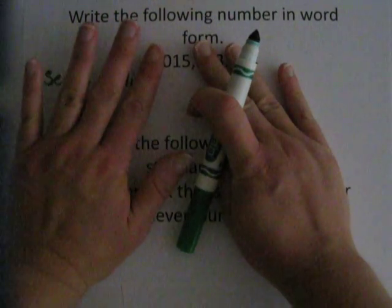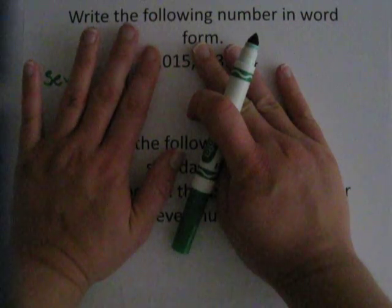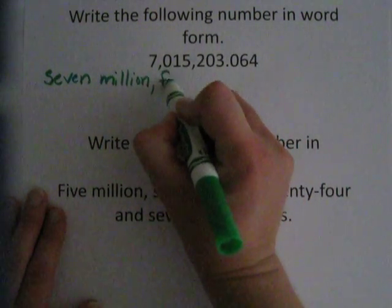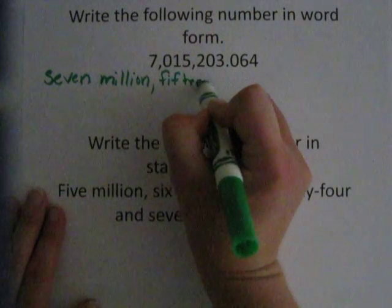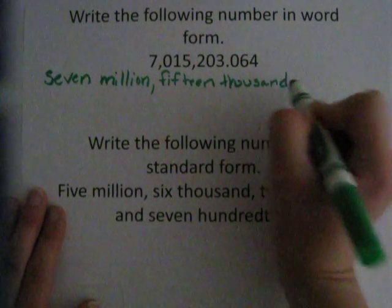Then I look at this next three set of numbers. I say to myself, how do I read that, the ones between the commas? I read it as 15. That's 15. It's in the thousands family, so thousands. 15,000.